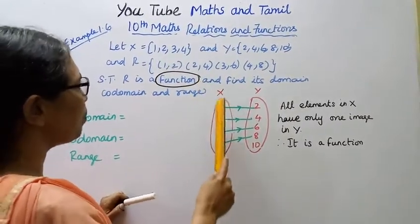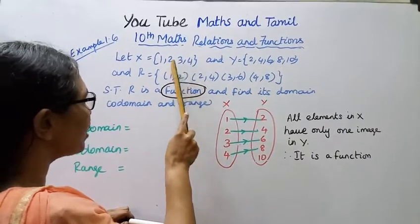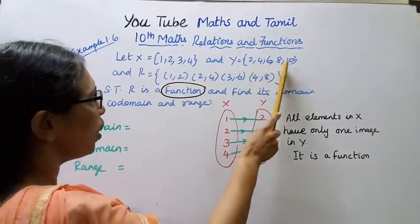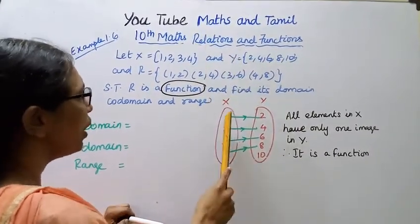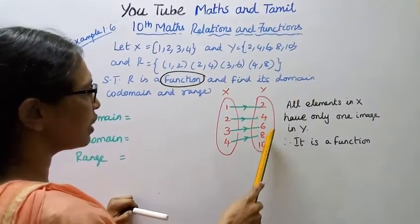The mapping is one arrow diagram. This is the elements. X belongs to X, Y belongs to Y. This is 1, 2, 3, 4; 2, 4, 6, 8, 10.